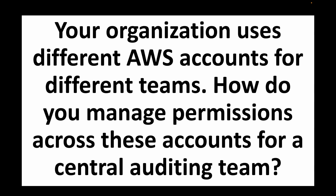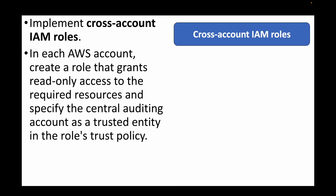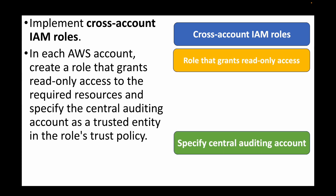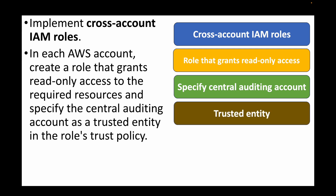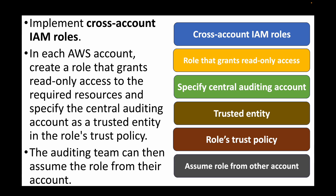The next question is: your organization uses different AWS accounts for different teams — how do you manage permissions across these accounts for a central auditing team? For this, we implement a cross-account IAM role. In each AWS account you create a role granting read-only access to the required resources, then specify the central auditing account as the trusted entity in the role's trust policy. The auditing team can then assume this role from their account to perform audits.